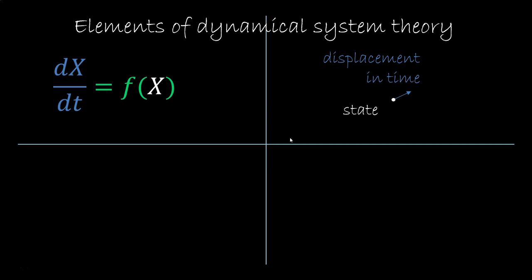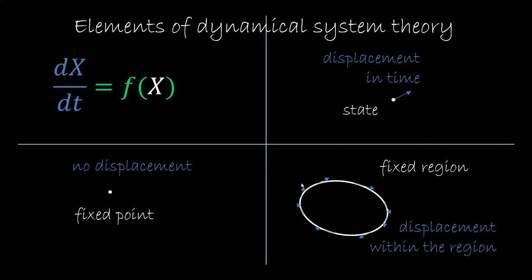Now, some points may stay where they are, they have no displacement. We call these fixed points. You can also have a fixed region. Now each point in the region may move, but it moves within the region. So each point may not be fixed, but the region as a whole is fixed.